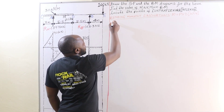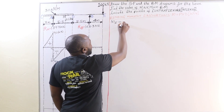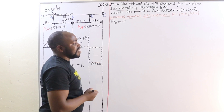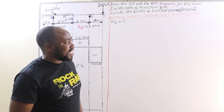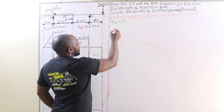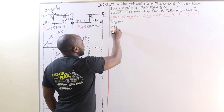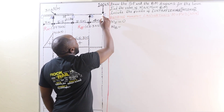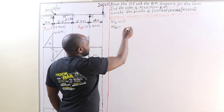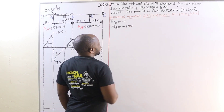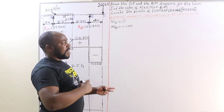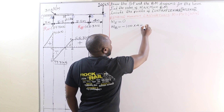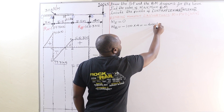We are going to begin on the right-hand side by determining the bending moment at point E, which is going to be zero since we have the load but not the distance. Then the bending moment at point B is going to be 100 kilo-Newtons times the distance from E to B — negative 100 since that is a clockwise moment on the overhanging end — multiplied by a span of 4, giving negative 400 kilo-Newton-meters.